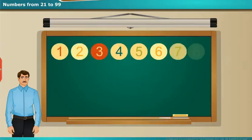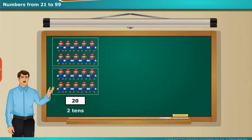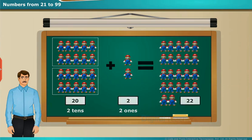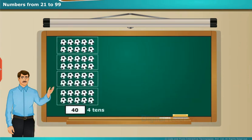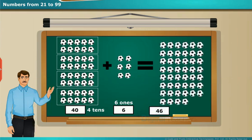Hello children, today we are going to learn the numbers that come after 20. If we look at the picture, we have two bundles of toys, which are two 10-groups, and 2 individual toys — so the total number of toys is 22. Similarly, we have four bundles of balls, which are four 10-groups, and 6 individual balls, so the total number of balls is 46.